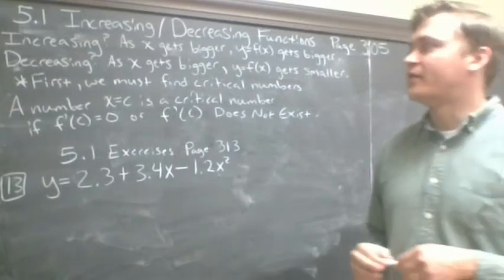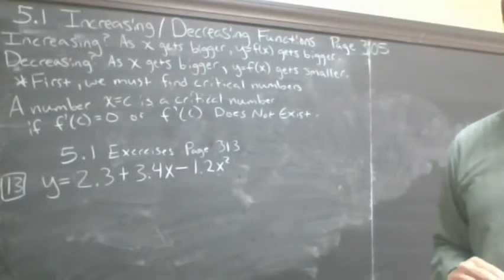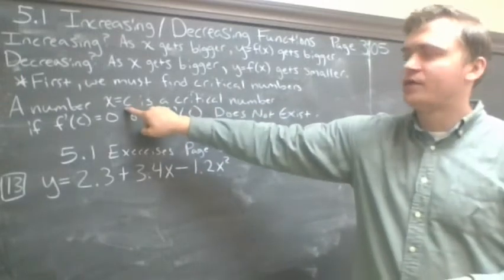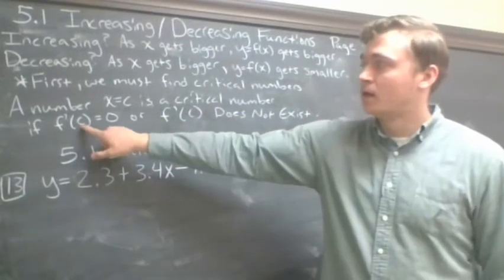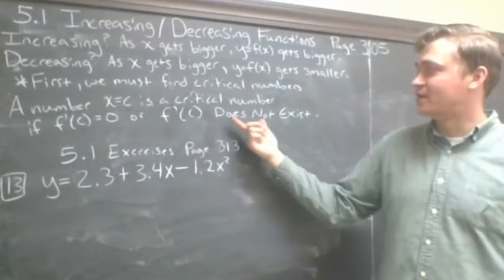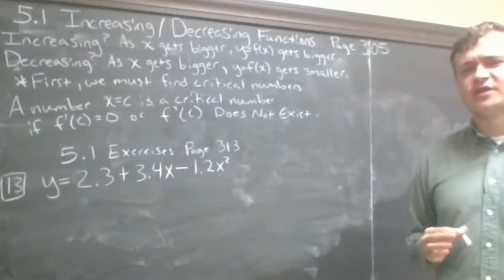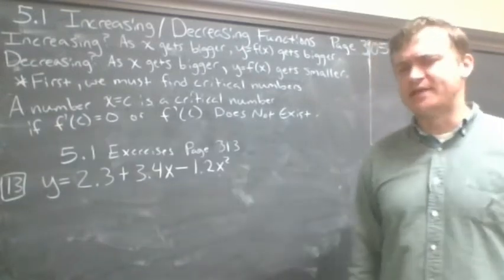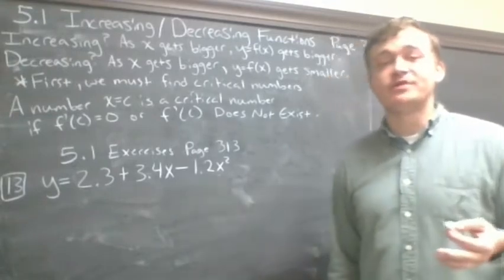How do we bring this all together and apply calculus here? Well, the first thing we want to do is find what is called a critical number — and there might be more than one. A number is a critical number if it comes from the domain. It's an X coordinate. An X coordinate is a critical number if F prime of C equals zero, or if F prime of C does not exist — such as a jump discontinuity or a vertical asymptote.